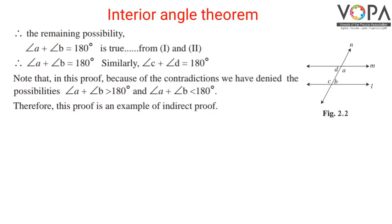Note that in this proof, because of the contradictions, we denied the possibilities of angle A plus angle B being greater than 180 degrees and less than 180 degrees. Therefore, this proof is an example of an indirect proof.